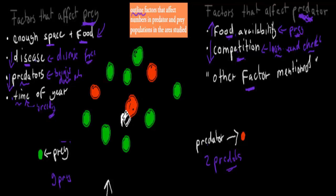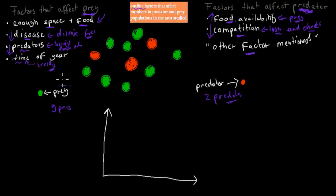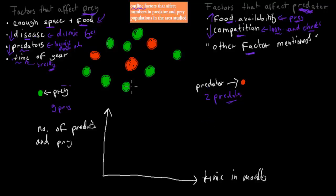The relationship between predators and prey is one of fluctuation — it goes up and down in a pattern. To draw this as a graph: on the vertical axis we measure the number of predators and prey; on the horizontal axis we have time in months. The legend shows the red line for predators and the green line for prey.